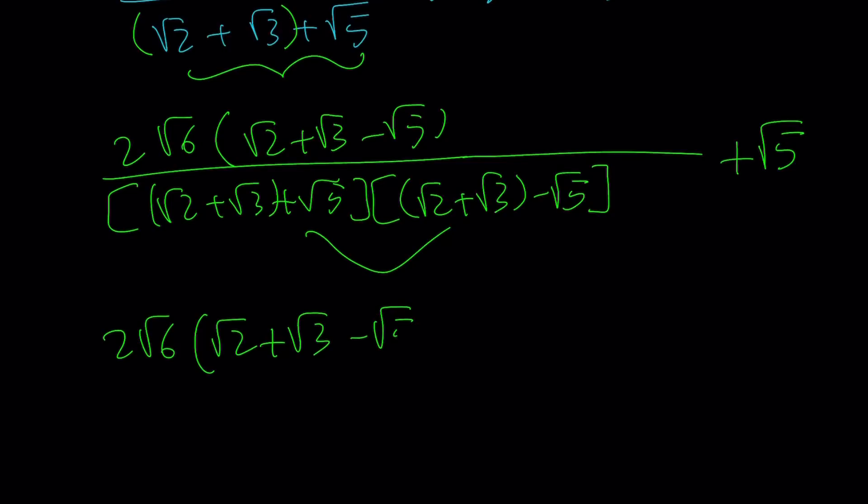At the bottom, you're going to be multiplying something that looks like a plus b times a minus b. And that is equal to a squared minus b squared from difference of two squares. So this is equal to root 2 plus root 3 squared minus root 5 squared. But that is 2 plus 3 plus 2 root 6 minus 5.